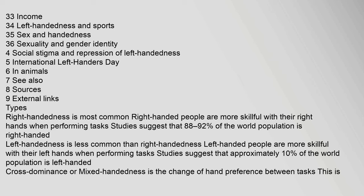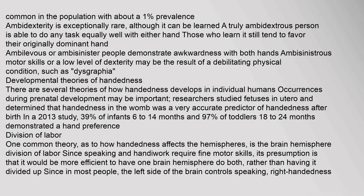Cross-dominance, or mixed-handedness, is the change of hand preference between tasks. This is common in the population with about a 1% prevalence. Ambidexterity is exceptionally rare, although it can be learned. A truly ambidextrous person is able to do any task equally well with either hand. Those who learn it still tend to favor their originally dominant hand. Ambisinister people demonstrate awkwardness with both hands; ambisinistrous motor skills or a low level of dexterity may be the result of a debilitating physical condition, such as dysgraphia.